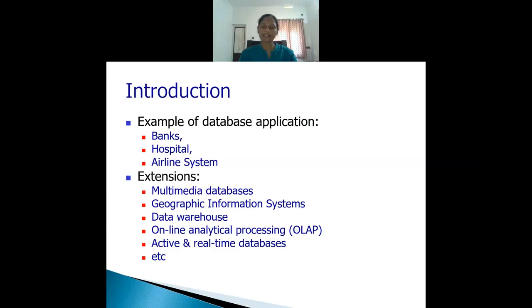Initially, only text data was stored in databases. Then technology improved and there are some extensions of databases. The first one is multimedia databases, which have the capacity to store pictures, video, and sound messages. Then there is the geographic information system, which can store and analyze maps, weather data, and satellite images. Then there is data warehouse and online analytical processing, which are used by companies to analyze information for decision making.